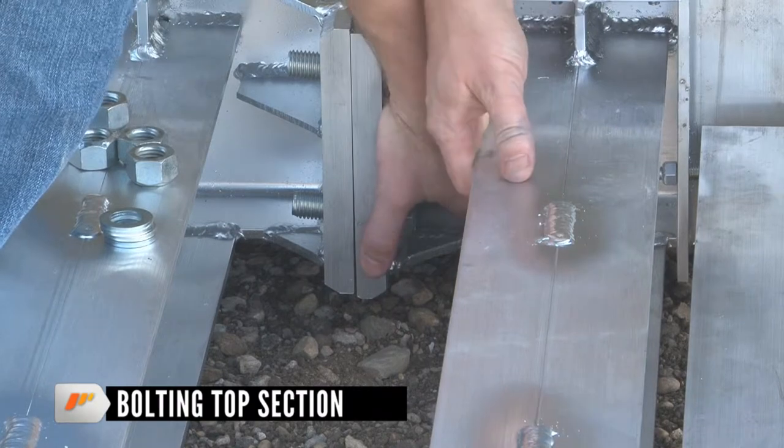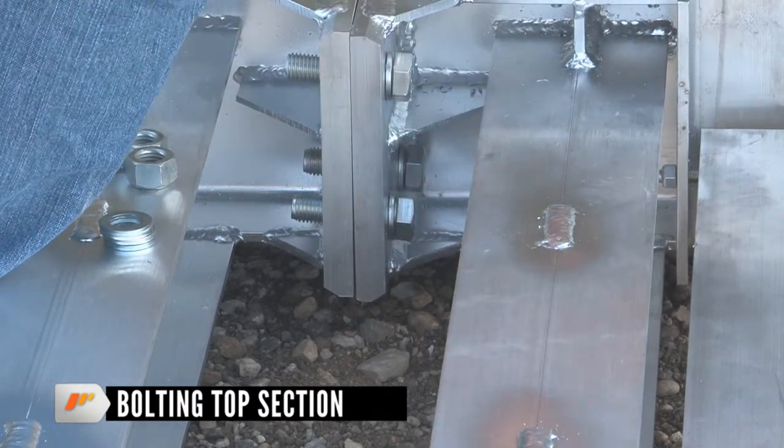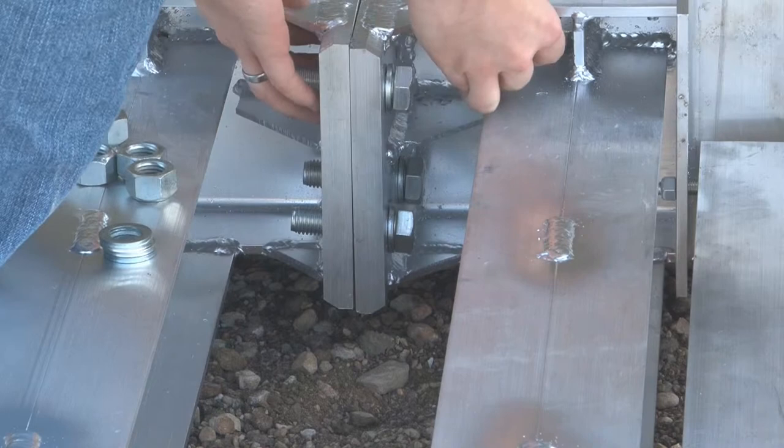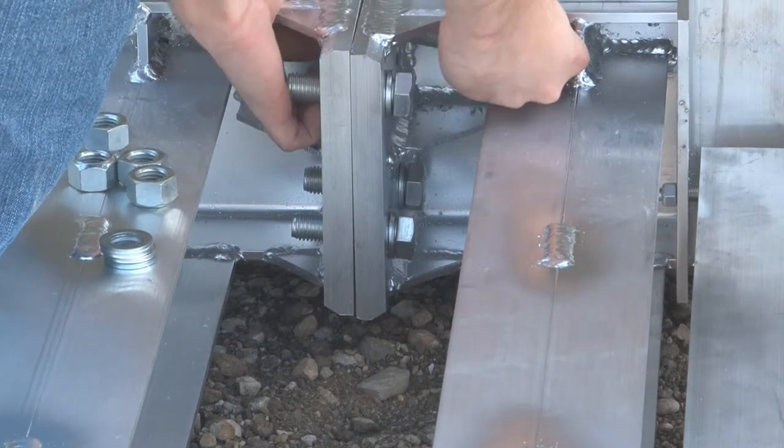Bolting top section together. Clean splice plates on top sections and deburr if necessary. Bolt together as in Part A.